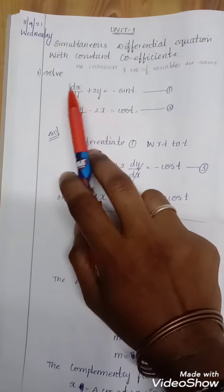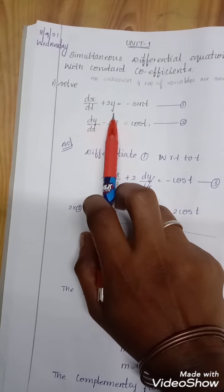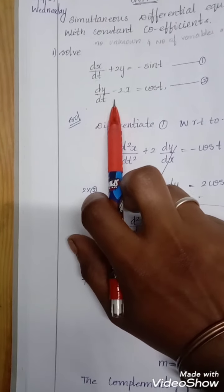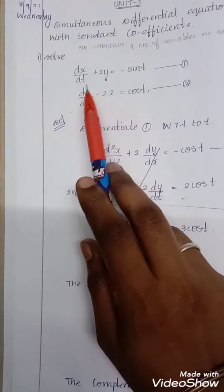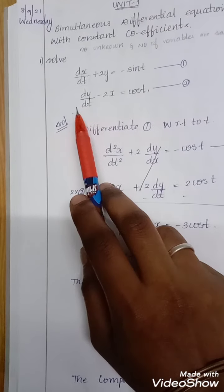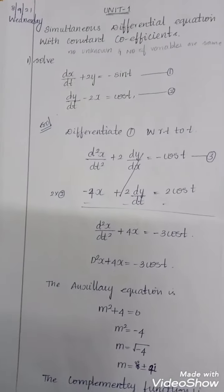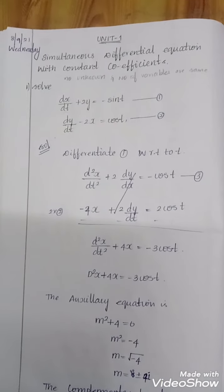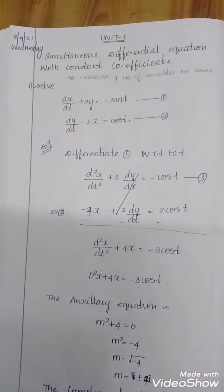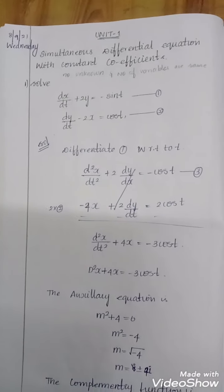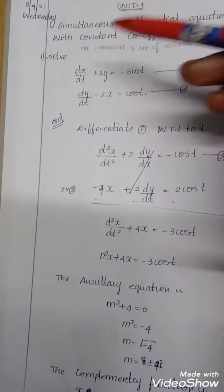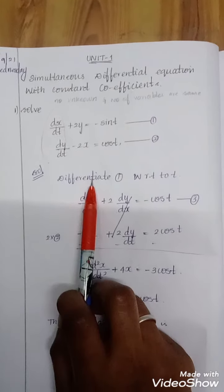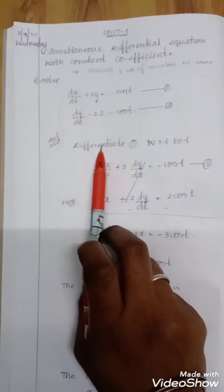The problem is: dx/dt + 2y = -sin(t) and dy/dt - 2x = cos(t). We consider the first as equation one and the second as equation two. Using the elimination method, we solve these two equations to find x and y. Since the question is in differential form, we need to differentiate the first or second equation.